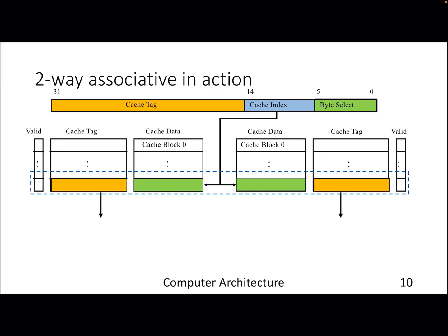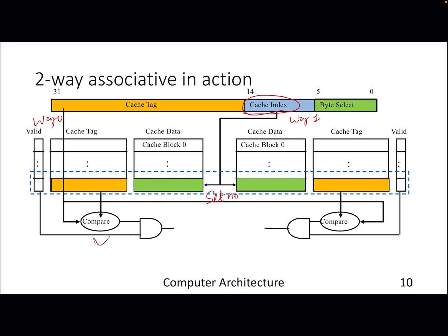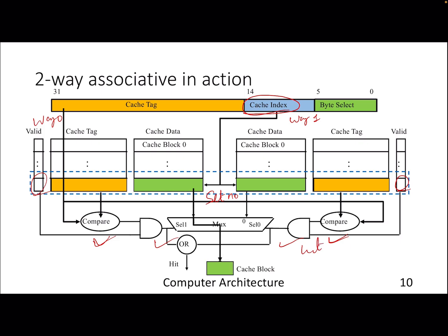We are dealing with two ways — way 0 and way 1. We don't need bits to identify which way we are going for; we just find which particular set we are going for. We extract the index bits to get a set number, not a line number, because a set is a collection of multiple lines. It compares the tag bits of both lines, and assuming the valid bit is set in both cases, whichever comparator gives a hit — that is the one from which you extract the data, either from way 0 or way 1.